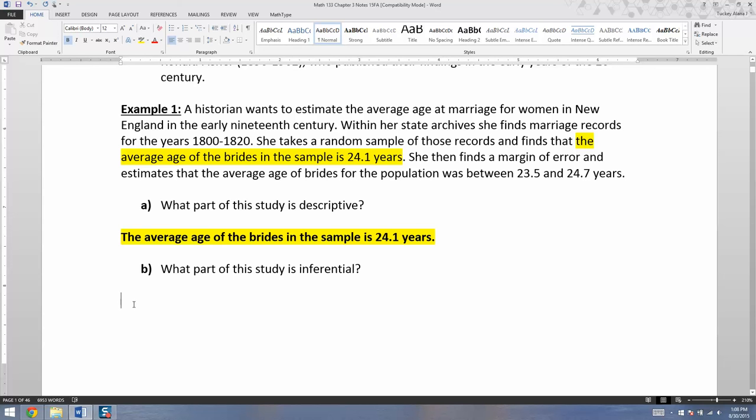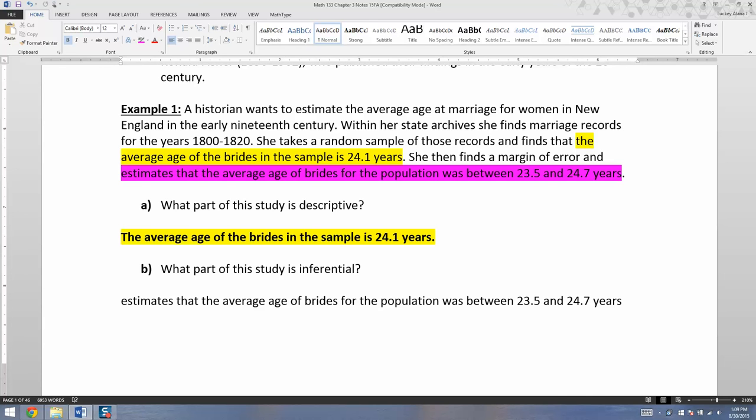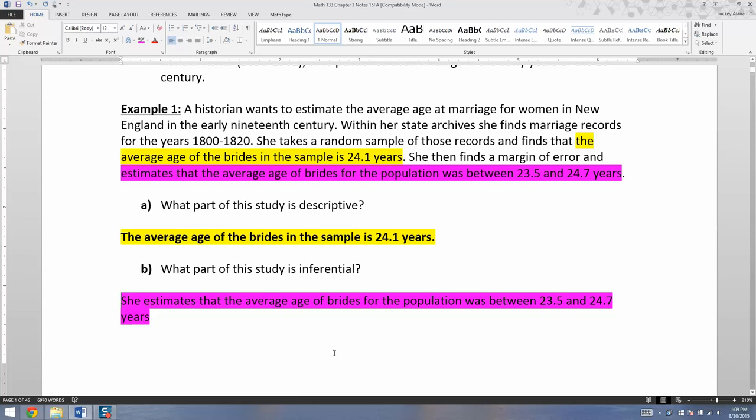So then from there, she needs to make a prediction about what she thinks. She didn't look at every single record. And quite frankly, she's only looking at this one state. So from 1800 to 1820, what about the other states around there? What about the people that weren't in those particular records? She needs to infer from there about the larger group of women in that age group from 1800 to 1820. And that would be this part. She finds the margin of error. We'll discuss what that means in chapter nine. But she estimates that the average age for the brides of the population was between 23.5 and 24.7 years. So it's not 24.1. What she's saying is she thinks it's somewhere in that range.